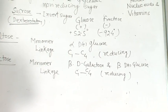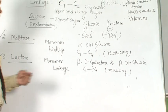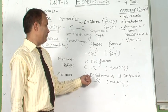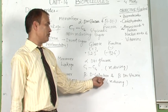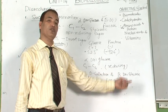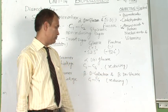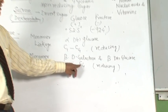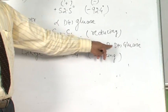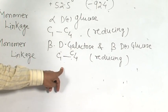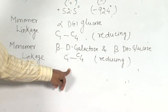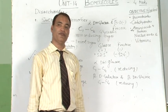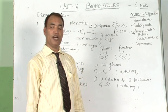The third example is lactose. The monomers of lactose are beta-D-galactose and beta-D-plus-glucose. The linkage is C1–C4, specifically C1 of galactose and C4 of glucose, and this is known as a beta-glycosidic linkage. Lactose is also a reducing sugar due to the presence of a free carbonyl group.